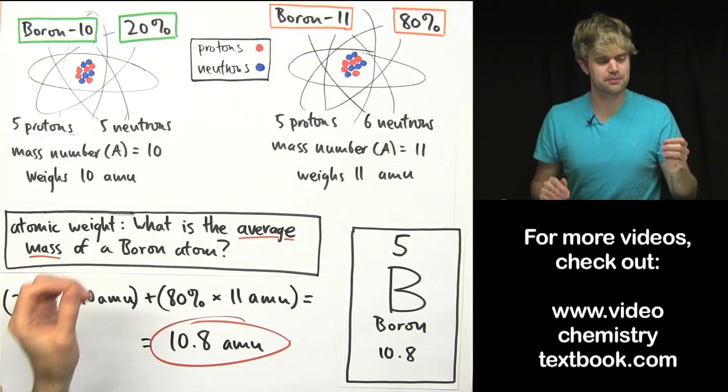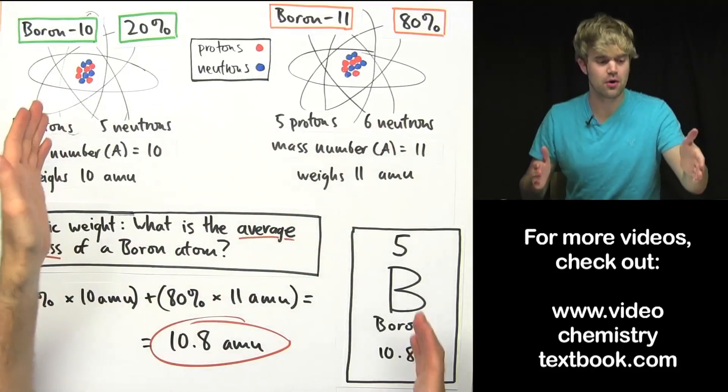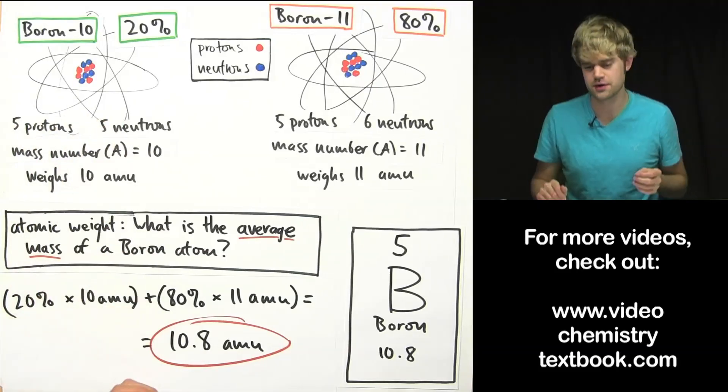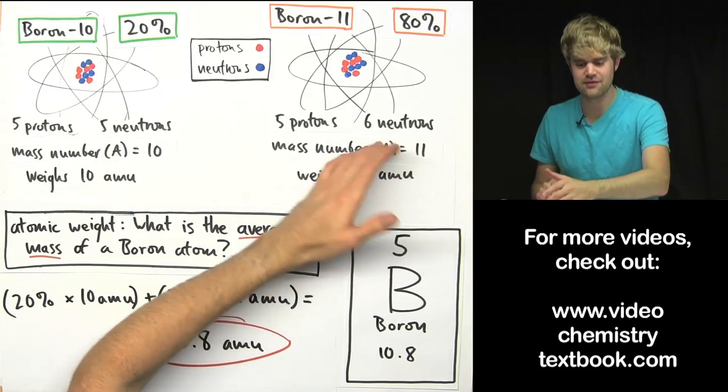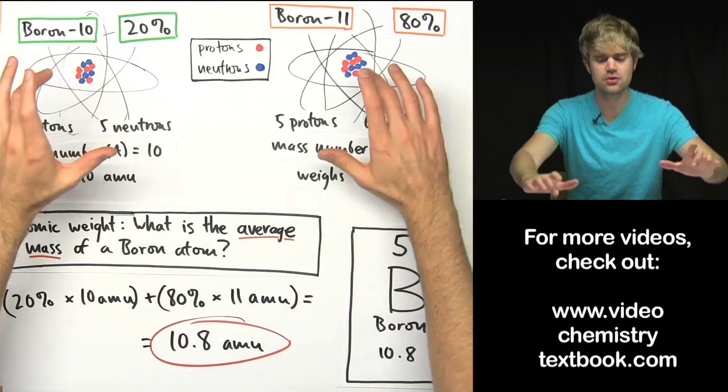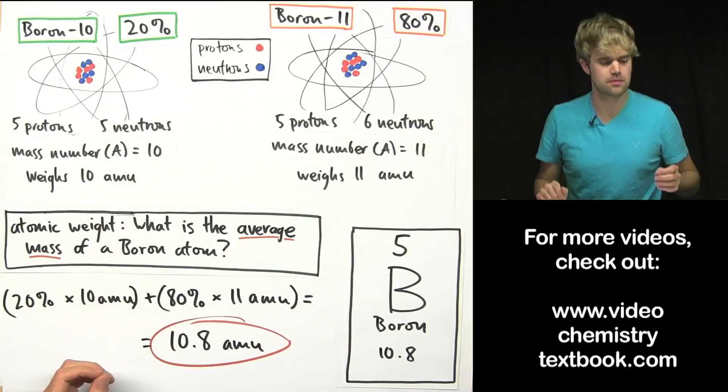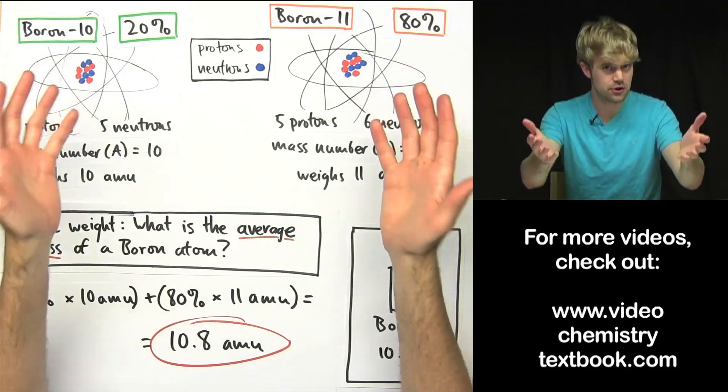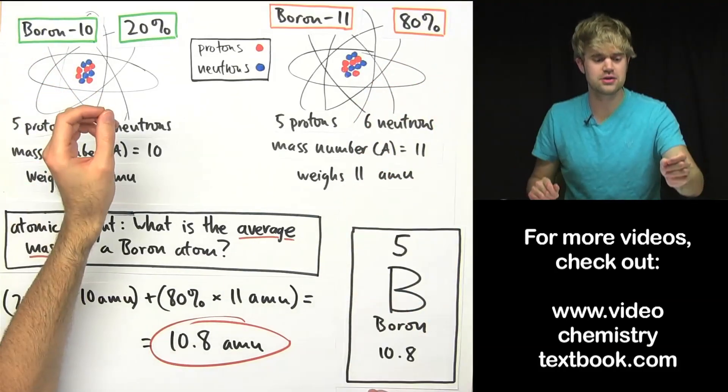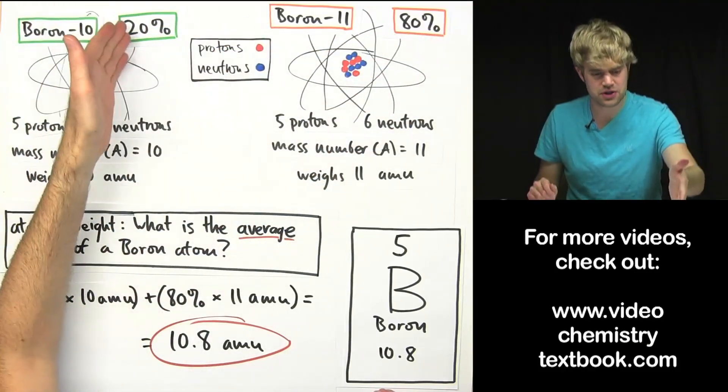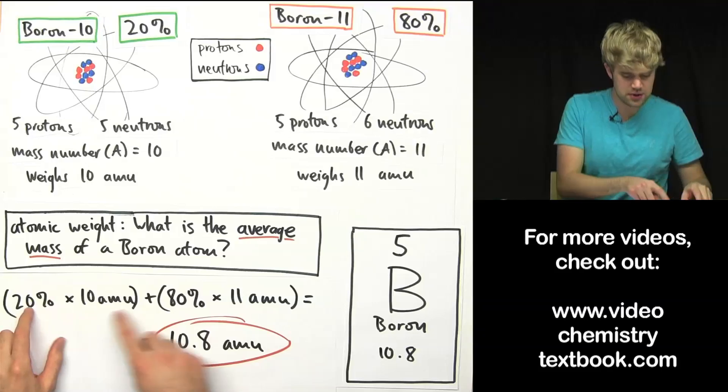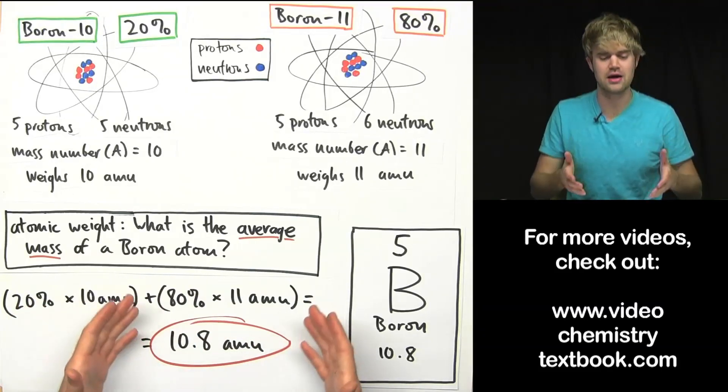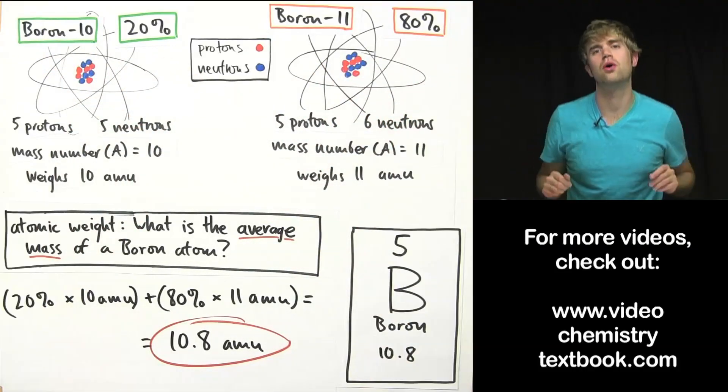mass number is something that applies to an individual atom or to an individual isotope. The mass number of this is 10 because it has 5 protons and 5 neutrons. The mass number of this is 11 because it has 5 protons and 6 neutrons. These are individual atoms or individual isotopes. Atomic weight takes these two isotopes into account and it also takes into account the amount of each that we have, 20% of this, 80% of this. So we have to use these percentages when we do the math to figure out what the average mass of all the different types of boron would be.